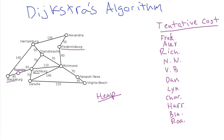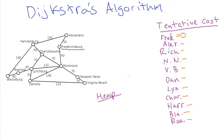To get to Roanoke we have to go through one of those two cities and need to know which is quicker. To know how long it takes to get to Blacksburg, we need to know how fast it takes to get to Harrisonburg. You can see it will spiral out — to know how long to get to Roanoke, we essentially have to know how long it takes to get to every other city. So we keep track of our starting city, Fredericksburg, and a tentative cost between Fredericksburg and every other city, set initially to infinity.